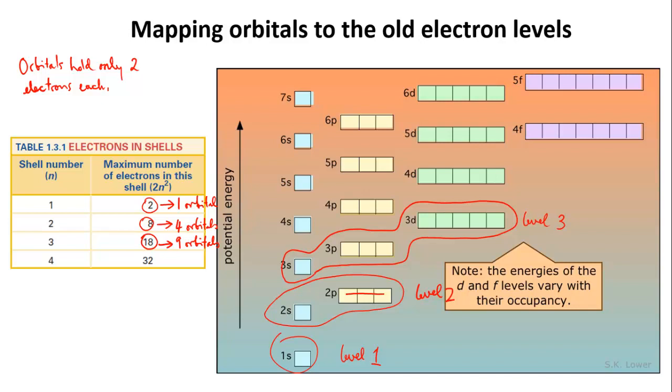You can see there's a pattern here too. Each level starts with an s orbital, and then it has p orbitals, and then d orbitals, and so on. The thing that all the orbitals of a particular type, all of the s orbitals, or all of the p orbitals, the thing that they all have in common is their geometry.